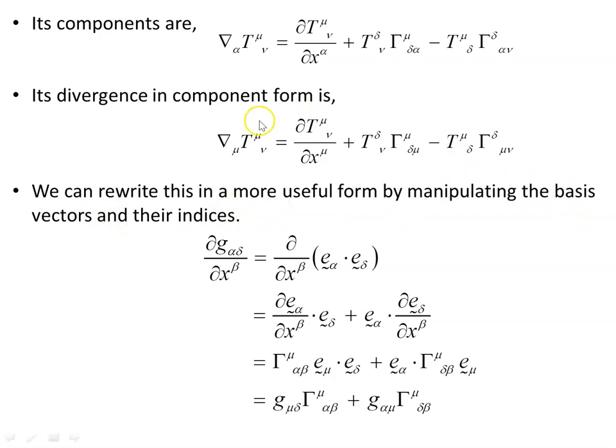We can rewrite this in a more useful form by manipulating the basis vector indices, making use of this identity from a previous video on variation of the metric determinant. The identity is: ∂g_{αΔ}/∂x^β expressed via the metric components composed of the inner product of e_α and e_Δ to give g_{αΔ}, then taking the partial derivative with respect to x^β. Applying the product rule gives us the affine connection, the Christoffel symbol γ^μ_{μαβ} here and γ^μ_{αΔ} here.